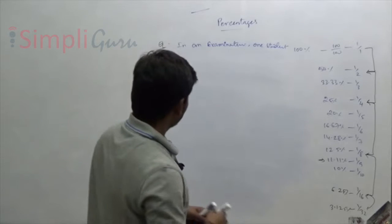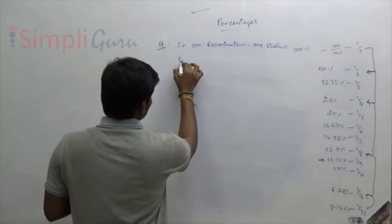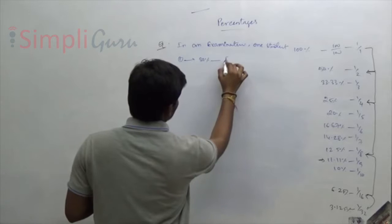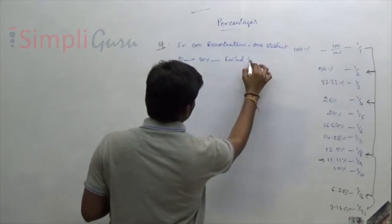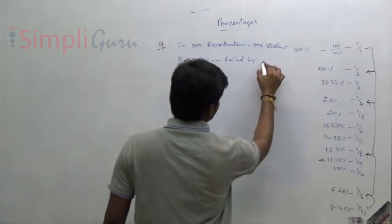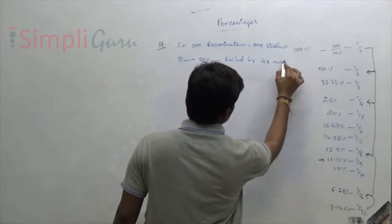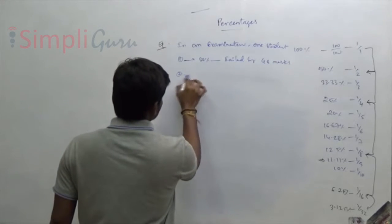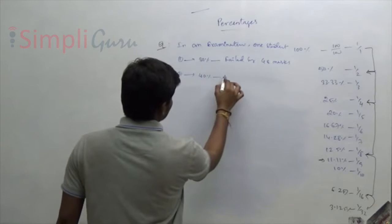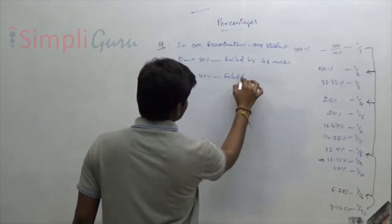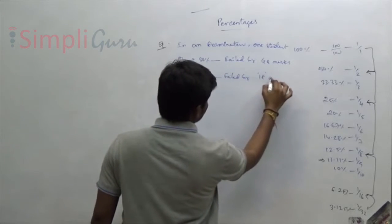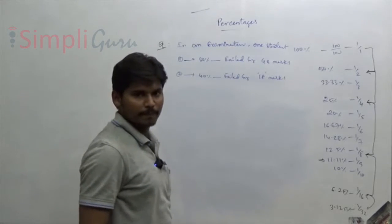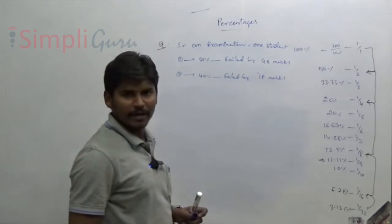Here is a new problem: one person got 30% and failed by 48 marks. Another student got 40% and also failed by 18 marks. In this case, both students failed, which is different from the previous problem.